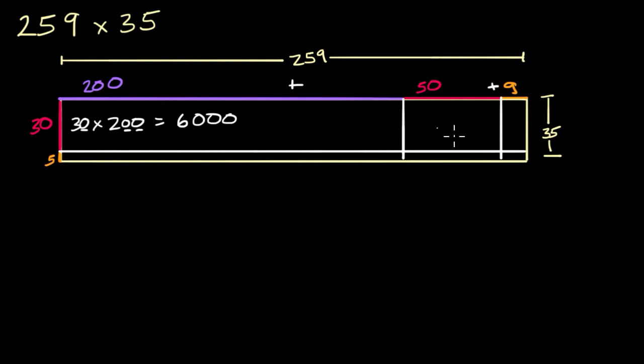And now what is the area of this section right over here? Well, that's going to be 30 times 50. So 30 times 50 is going to be equal to, 3 times 5 is 15, and then I have two more zeros, so it's 1,500. And then this over here is going to be 30 times 9, which 3 times 9 is 27, so 30 times 9 is 270.